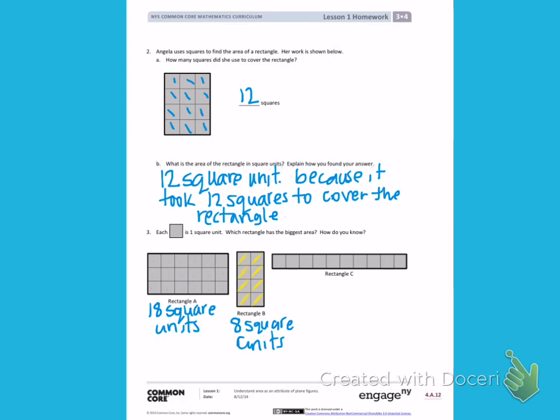And my last rectangle C. 1, 2, 3, 4, 5, 6, 7, 8, 9, 10 squares cover the area of that rectangle. So it is 10 square units.